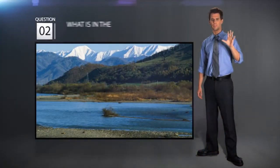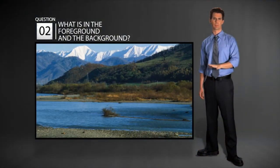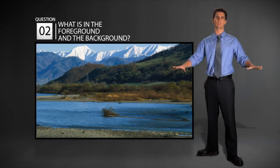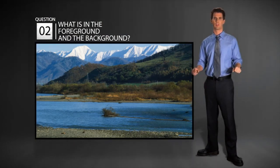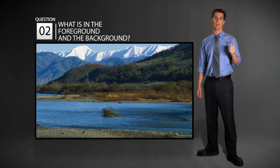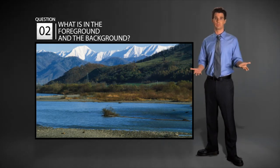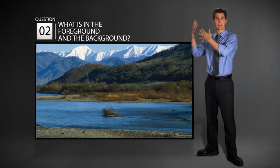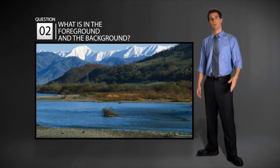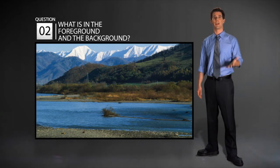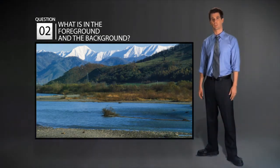The second question is: what is in the foreground of the picture? The foreground means the front area of the picture. The third question is: what is in the background of the picture? The background is the part that is in the back of the picture. Knowing the foreground and the background can often help you answer these photo questions.